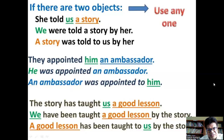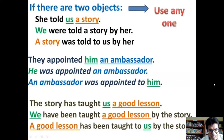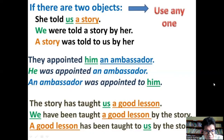'They appointed him an ambassador' — here we also have two objects. We can transform it in both ways: 'He was appointed an ambassador' or 'An ambassador was appointed to him.' Similarly, 'The story has taught us a good lesson' → 'We have been taught a good lesson by the story,' or 'A good lesson has been taught to us by the story.' Any of them will do.